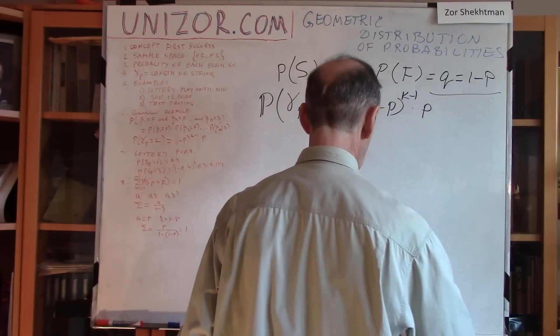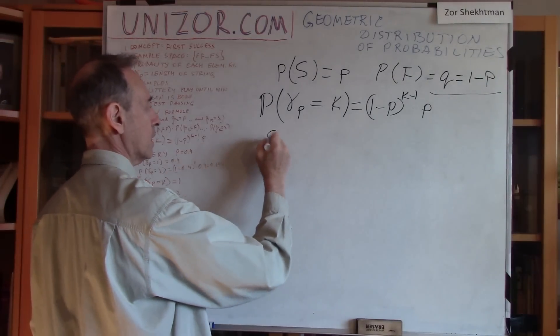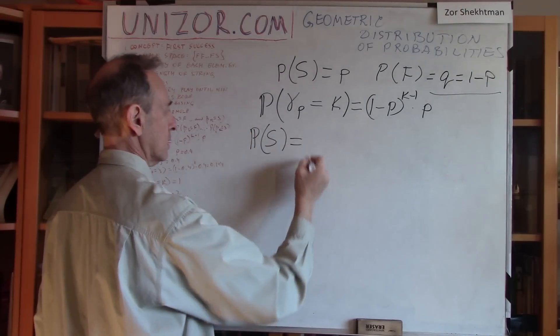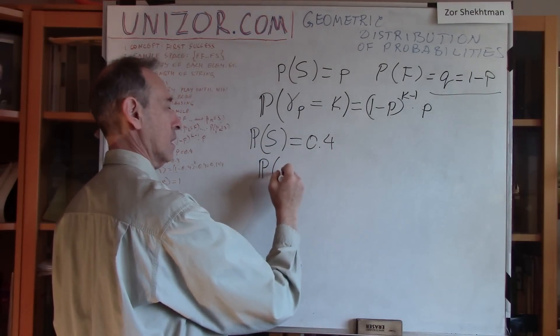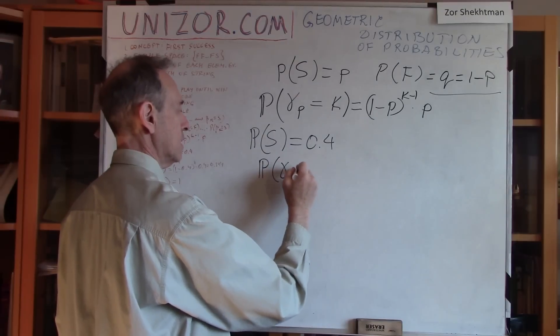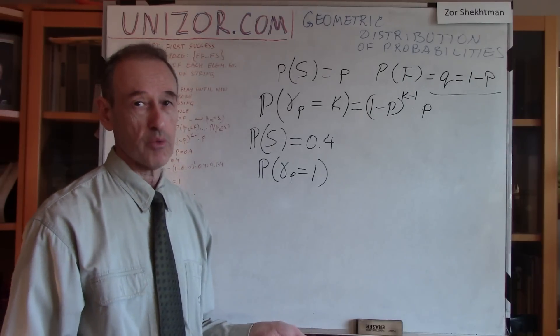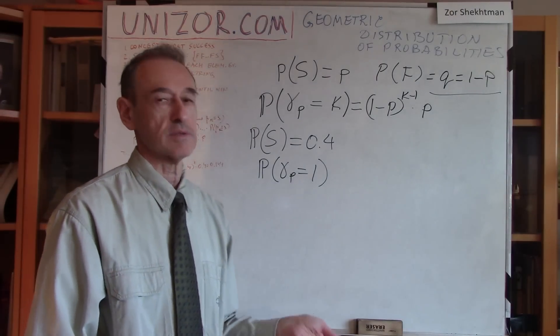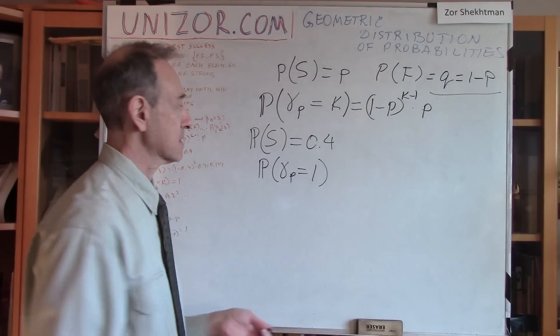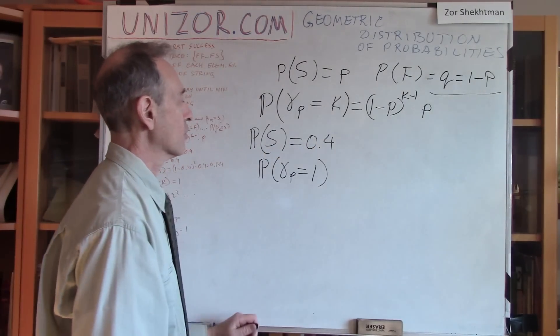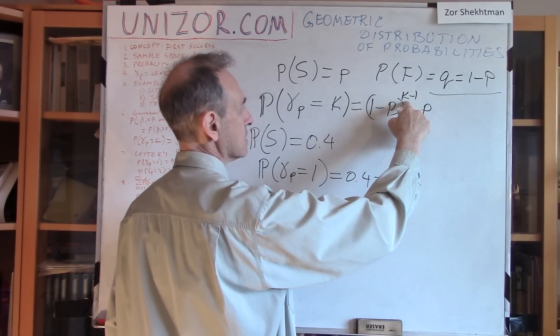So let's return to our example. Let's say the first example of the lottery when the winning is, let's say, 0.4. So what's the probability of our gamma P equals to 1? So on the first step we get a success. Well, obviously it must be 0.4, right? Because this is the first and only experiment which we are conducting, and it's supposed to end up in success, and the probability of success is 0.4. So you might have 0.4, right? Well, let's check it out, this formula.